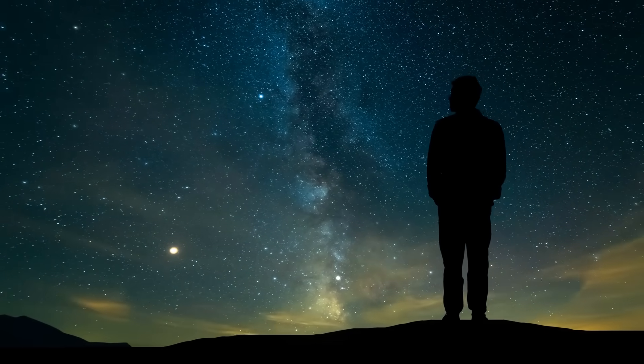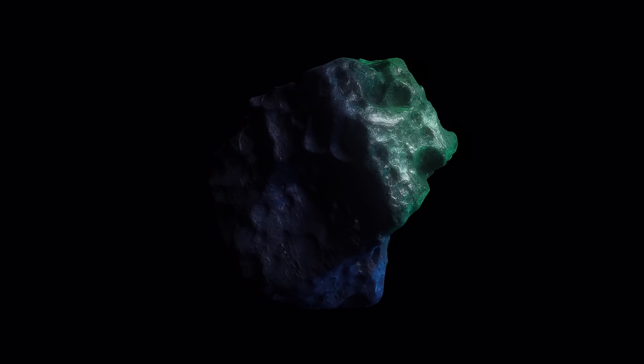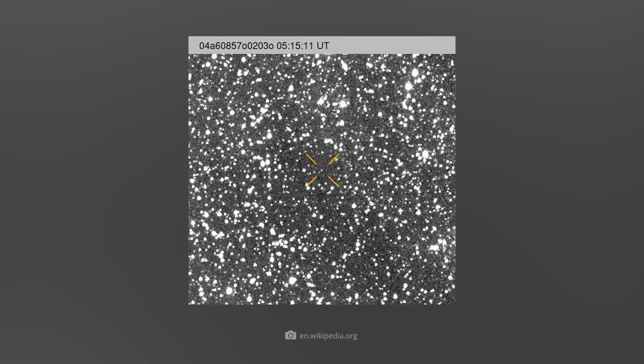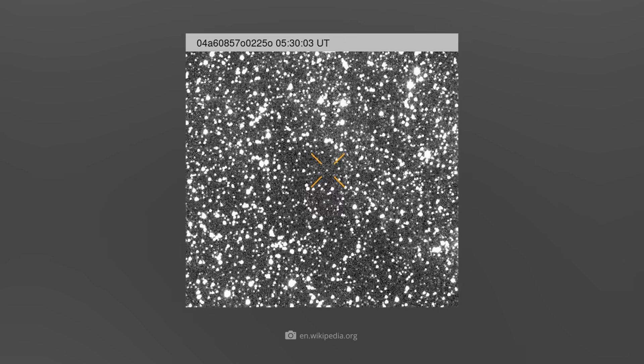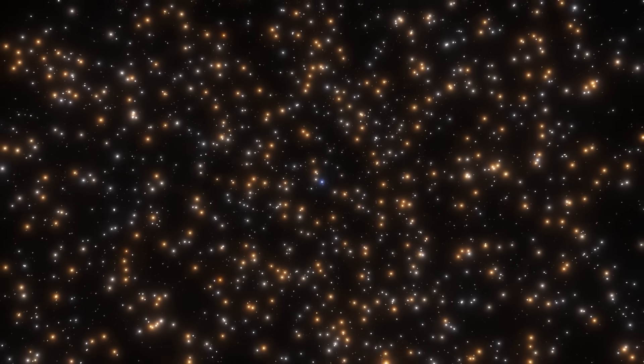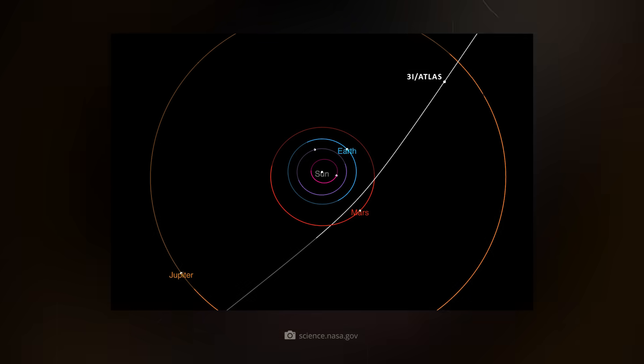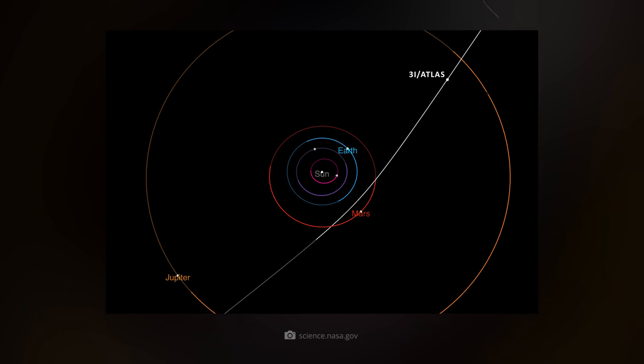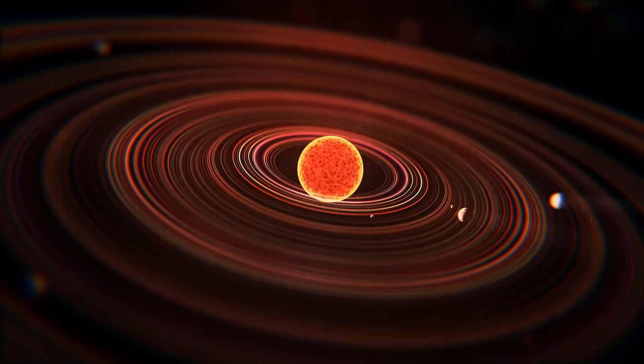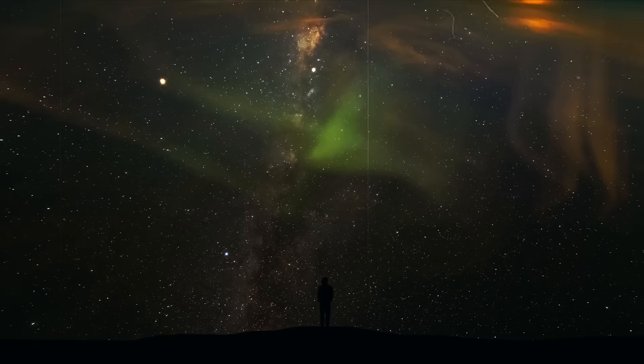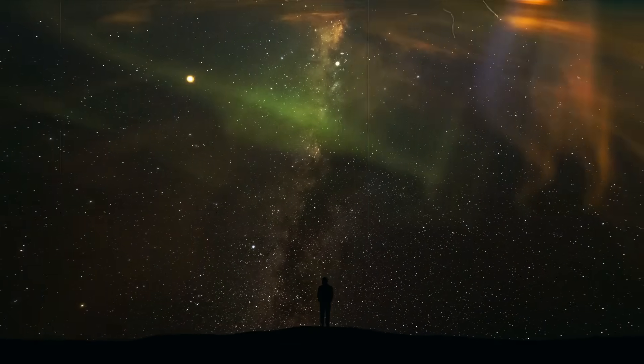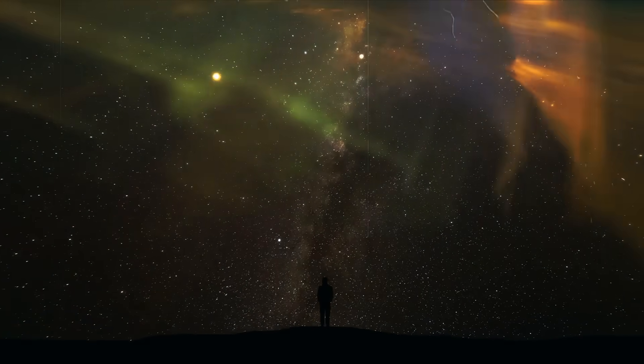Astronomy has not only gained an interstellar visitor, but also a heated debate. Discovered on July 1st, there is no longer any doubt that 3i Atlas has entered our home world from distant space. Its hyperbolic trajectory and exceptionally high speed clearly show that the object is not gravitationally bound to the sun. However, this makes the question of what exactly it is all the more controversial.